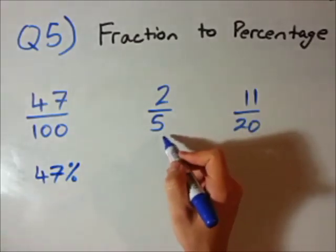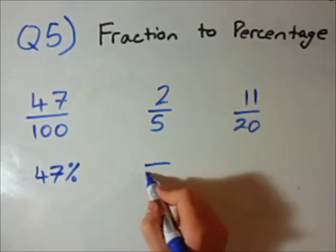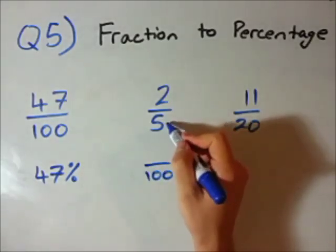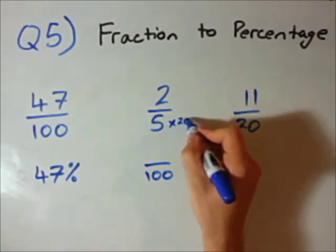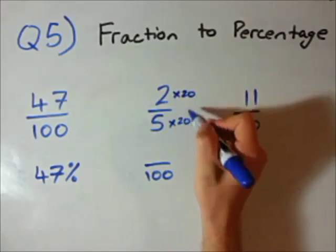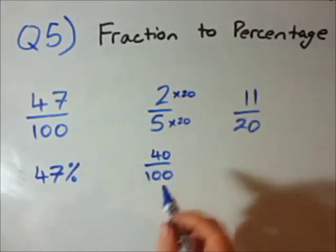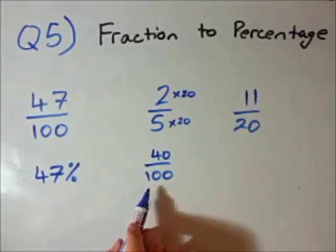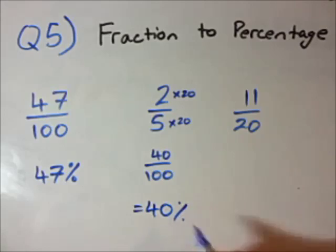Second one. 2 over 5. I want to change my denominator to be over 100. So how did I get to go from 5 to 100? Well I times it by 20. Now I have to times top and bottom by the same. That's the law of fractions. 2 times 20 is 40. I have my denominator as 100. That's great. I can just now my answer percentage is 40 percent.